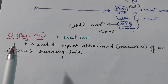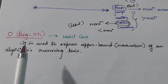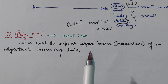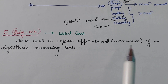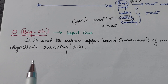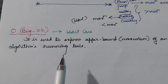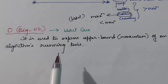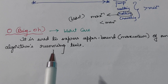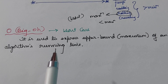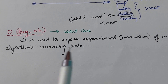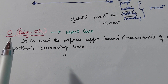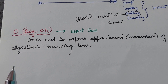Big O notation is used to represent the upper bound of an algorithm's running time. That means the upper bound of the time complexity of an algorithm is represented using Big O notation.